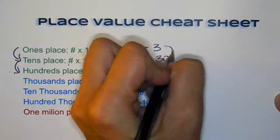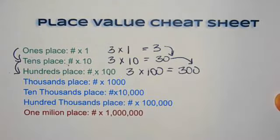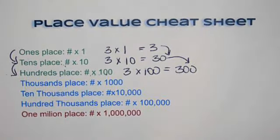So I'm doing three times 10, right? And then 30 times 10, which is 300, and so on and so forth.